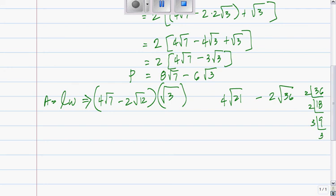Of course, we all know that the square root of 36 is 6. So 4√21 - 2 times 6, or simply, 4√21 - 12.